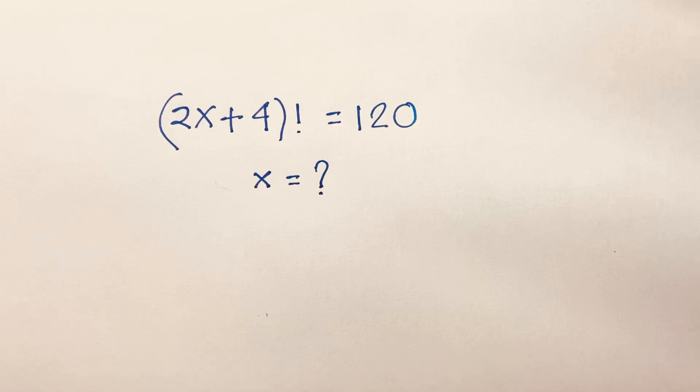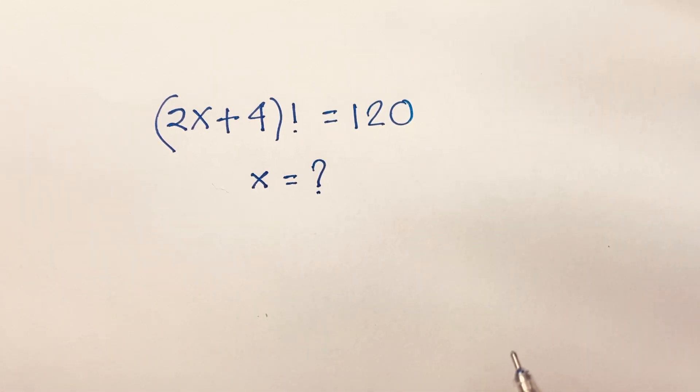How to solve this math Olympiad equation: (2x+4)! = 120. We need to find the value of x in this equation.